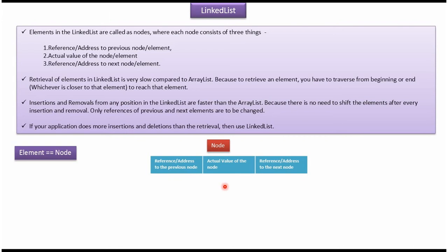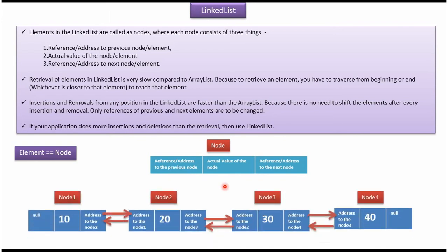Now we will see how each node is linked in a linked list. Here you can see four nodes which are linked together. Each node has three things: the address to the previous node, the actual value, and the address to the next node. If the address to the previous node is not there, then null will be there. If the address to the next node is not there, then null will be there.